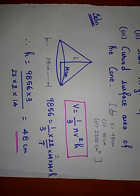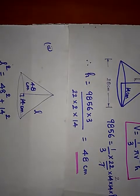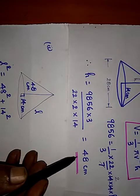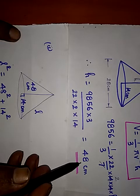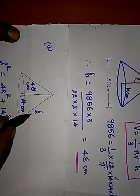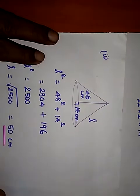Next, the slant height of the cone. We know radius is 14 centimeter and height is 48 centimeter. This forms a 90 degree angle, so we can apply Pythagoras theorem.